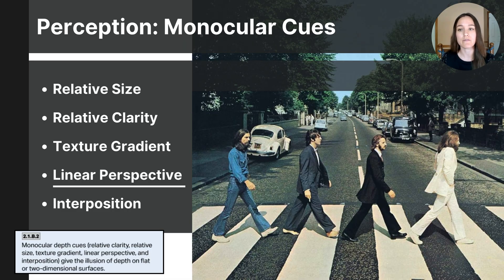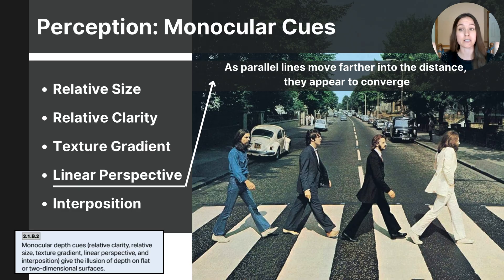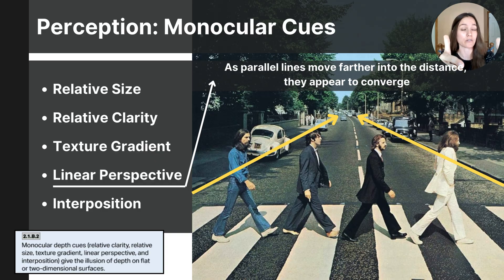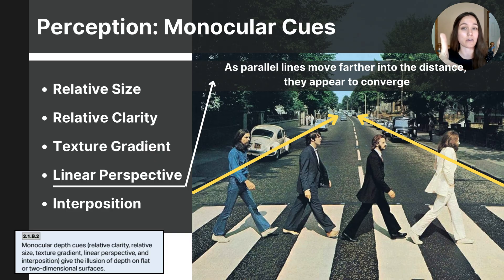Linear perspective is a cue that involves parallel lines that, as they go farther into the distance, appear as if they were to converge. You can see this in the photograph where the sidewalks meet the road. Follow those lines into the distance and you'll notice the parallel lines appear as if they are going to converge. The closer the lines are to us, the farther apart they appear, but as they get farther into the distance they appear to get closer together. This depth cue is called linear perspective.